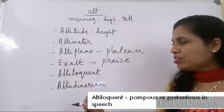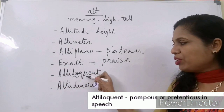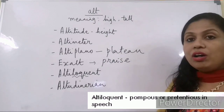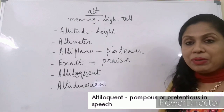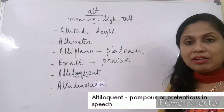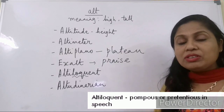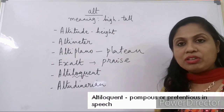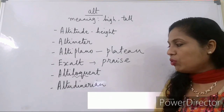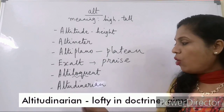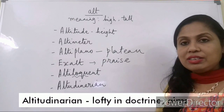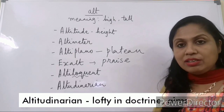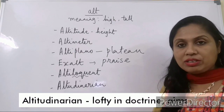Altiloquent — let's work this word out. The root word locu means to speak. So when a person speaks in a very high manner, is very pompous or pretentious in speech, such a person is known as altiloquent. Altitudinarian is a person who follows lofty ideals or doctrines.